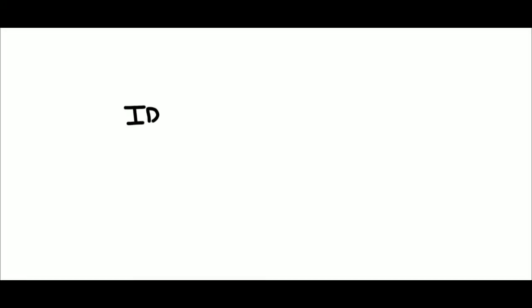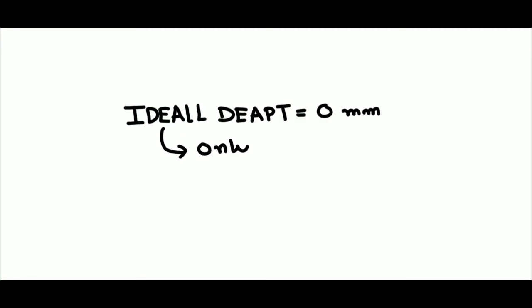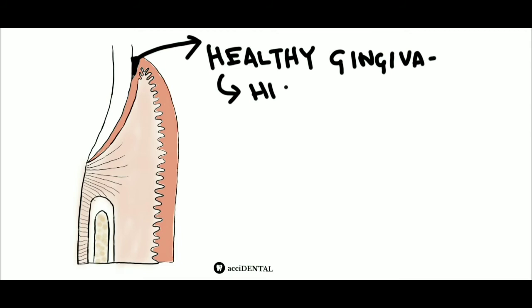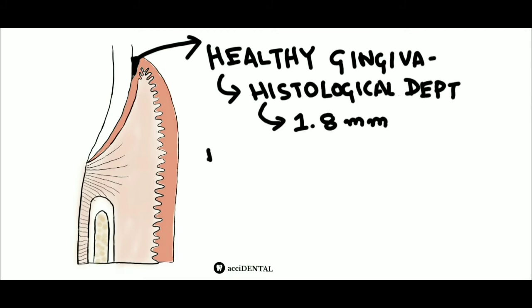In an ideal or normal condition, the depth is 0 mm, which is seen only in germ-free animals or after intense and prolonged plaque control. But in healthy human gingiva, we will find some depth, which is our histological depth. It is 1.8 mm but varies between 0 to 6 mm.